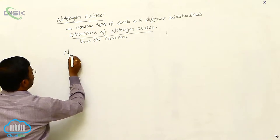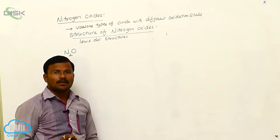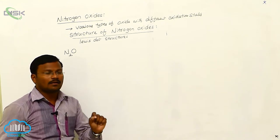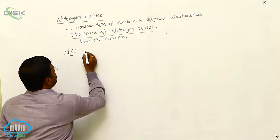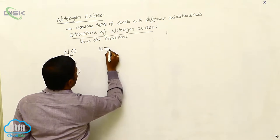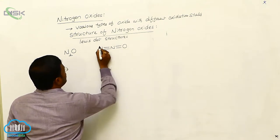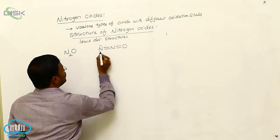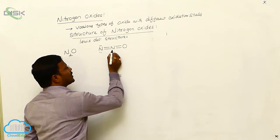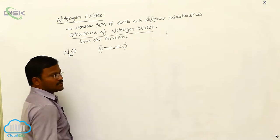That is N₂O — dinitrogen monoxide, nitrogen 1 oxide, nitrous oxide, or laughing gas. This will be represented as N double bond O, in which the terminal nitrogen has two non-bonding pairs of electrons, there is no non-bonding pair of electrons on the middle nitrogen, and two non-bonding pairs of electrons are present at oxygen.